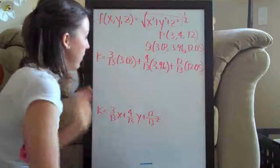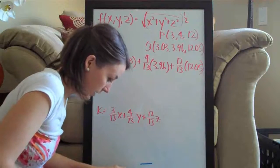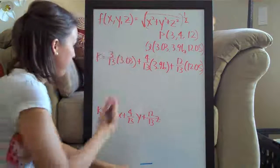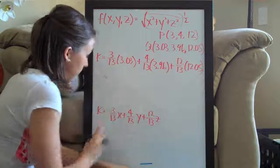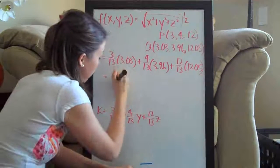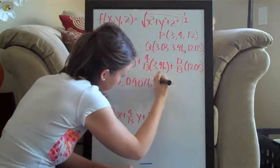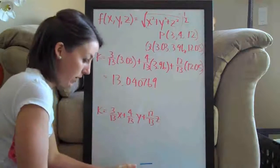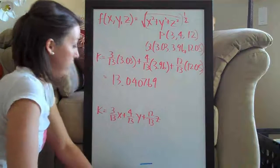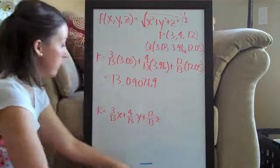And since I don't have a calculator in front of me, I went ahead and did this ahead of time and your answer ends up being thirteen point zero four zero seven six nine.